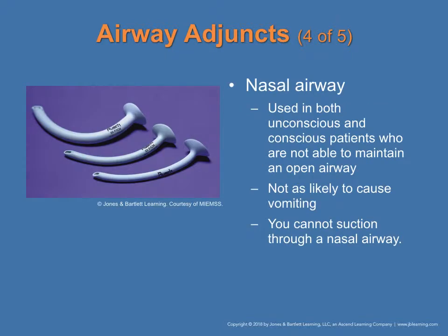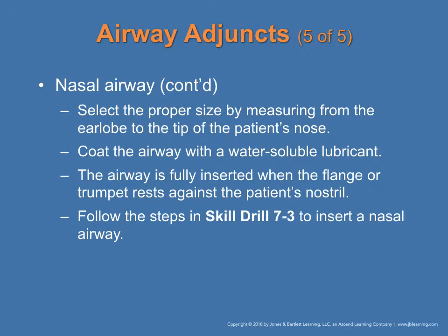There is also a nasal airway — nasal means nose. It is softer and more flexible, and we insert it into one of the nostrils to create a clearer path for air to reach the lungs. It bypasses the gag reflex because it does not go through the mouth. It can be used for both unconscious and conscious patients. Proper size is important — measured from the tip of the earlobe to the nose — and lubricant is needed so it can pass through the narrow parts of the nose.